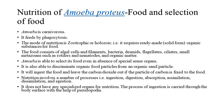It feeds by phagocytosis. The mode of nutrition is zootrophic or holozoic, i.e., it requires ready-made, solid form, organic substances for food. The food consists of algal cells and filaments, bacteria, desmids, flagellates, ciliates, small metazoans such as rotifers and nematodes, and organic matter.